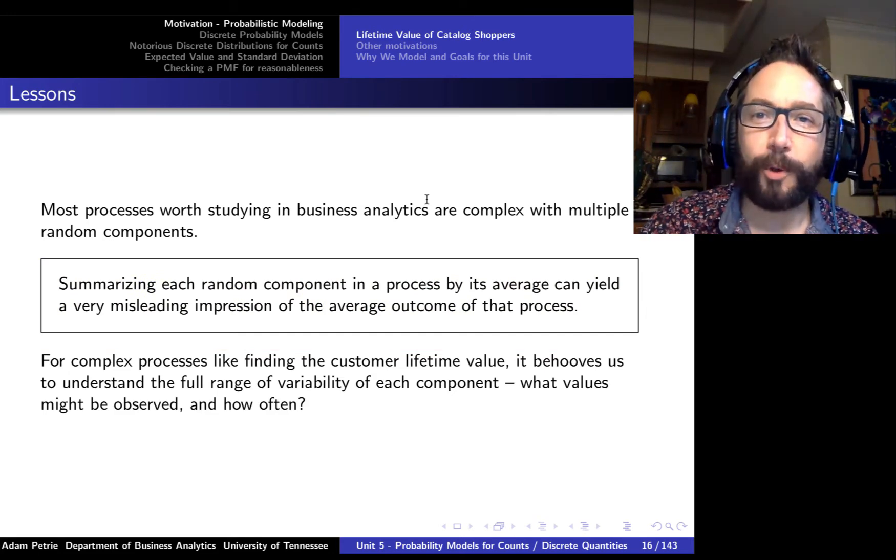That's one of the key things about why we want to have a full appreciation, a full understanding of the amount of randomness in the processes that we're studying, in that in order to figure out what we're really interested in, like customer lifetime value, we need to fully account for the bits of randomness that goes into that calculation. Summarizing each random component in a process just by its average ends up potentially yielding a very misleading impression of the average outcome of the process. As business analytics practitioners, we want to do a better job. We want to have a full understanding of the variation of all random components of what we're studying here.